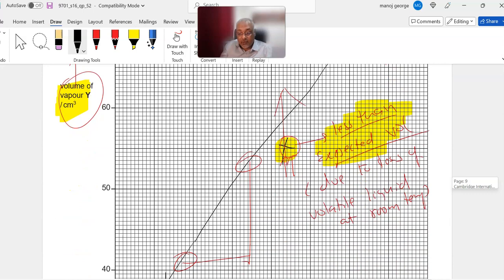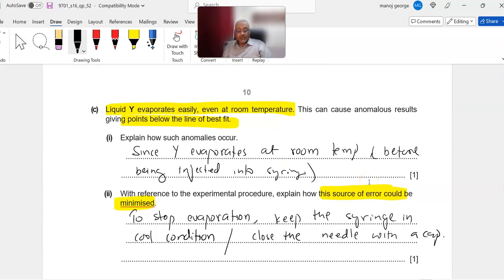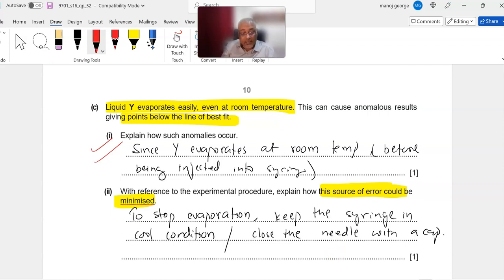Once we get the graph all done, normally you will get questions to explain how that anomalous point happened. It's the reason why you're getting less than expected volume of the vapor, which means some liquid has escaped. How do you reduce that possibility of error? The easiest thing when dealing with a highly volatile liquid is to reduce the temperature. If your temperature is low, the amount of evaporation will be highly reduced. That's one way to control the possibility of volatile liquid converting into gas. Another is to completely close the syringe with a cap to prevent the loss of liquid as vapor.